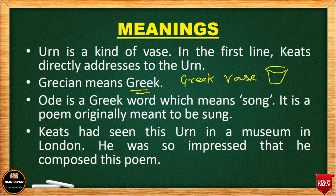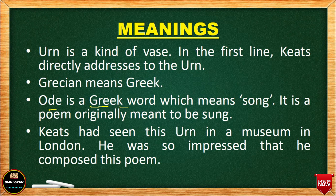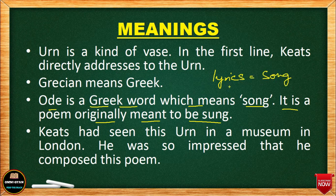Keats actually saw this urn — this vase — in a museum in London, and from that he got the idea and composed the poem. Now, what is an 'Ode'? Ode is a Greek word which means a song. An ode is a poem originally meant to be sung. It's basically lyrics — these lyrics are transformed into music and sung. So ode means a poem originally meant to be sung.